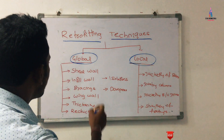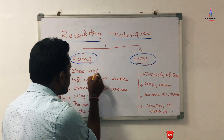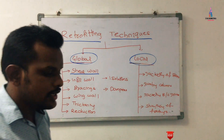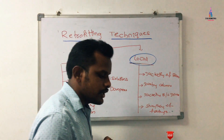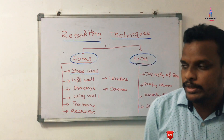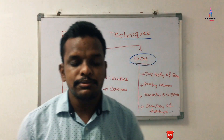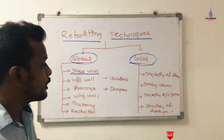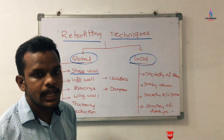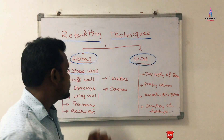In the global retrofication technique, the first one is the shear wall. This is one of the most important techniques for decreasing the deflection value of a building. For high-rise buildings and apartment buildings, most people are focusing on shear walls for decreasing deflection values.